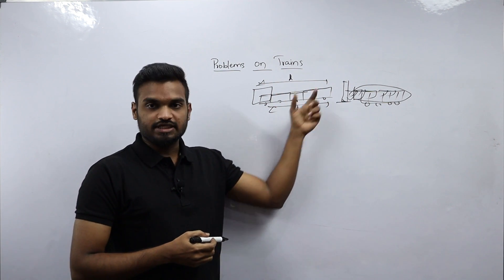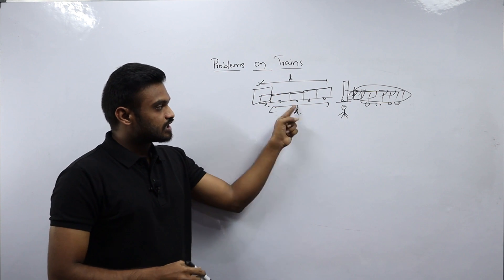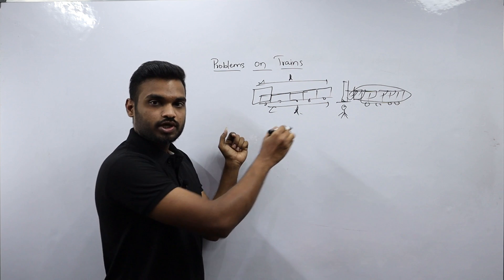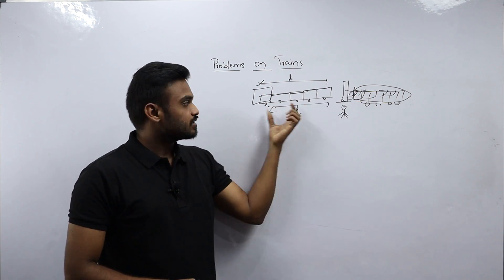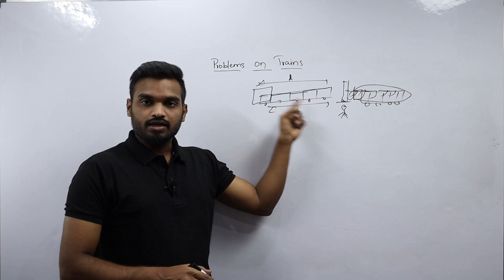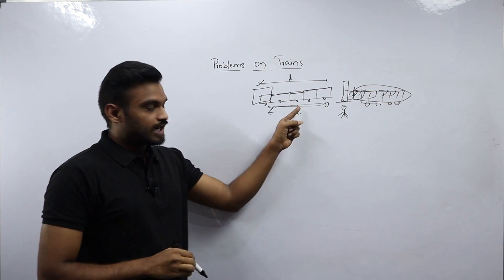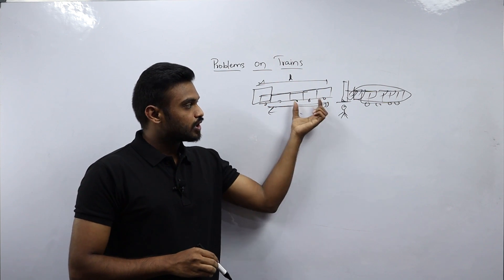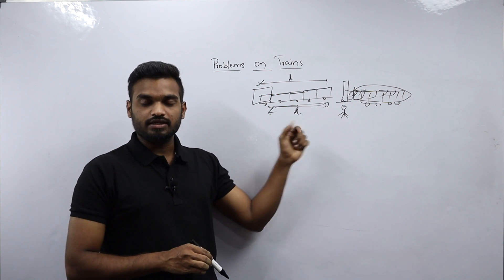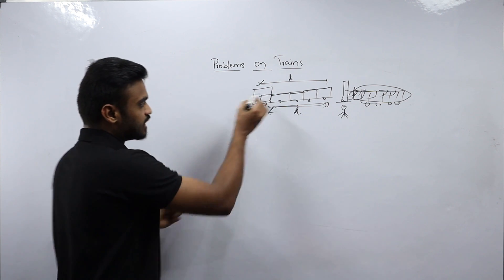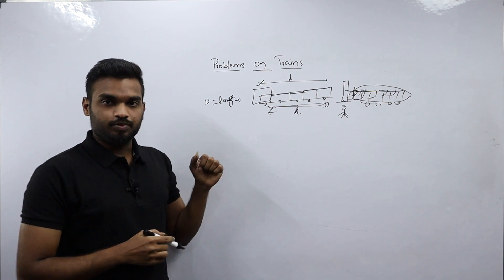In this type of question, when the train is crossing a pole or a man, the total distance is the length of the train. Only when all bogeys of the train are outside of the man or pole can we say the train has completely crossed. So whenever there is a pole or a person, the entire distance equals length of the train.